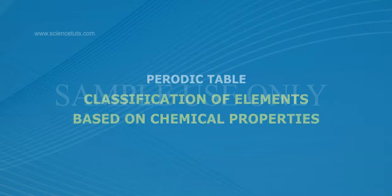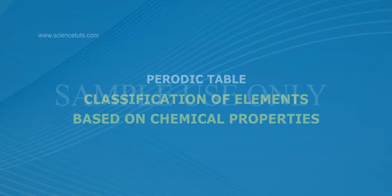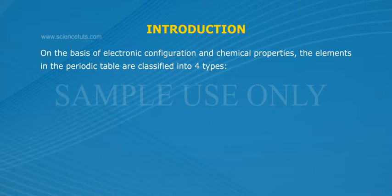Introduction. Classification of elements based on chemical properties. On the basis of electronic configuration and chemical properties, the elements in the periodic table are classified into four types.